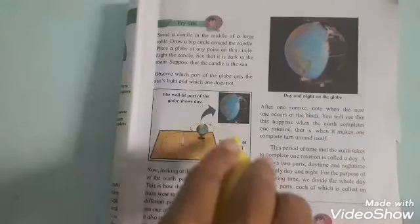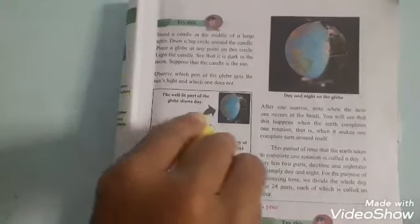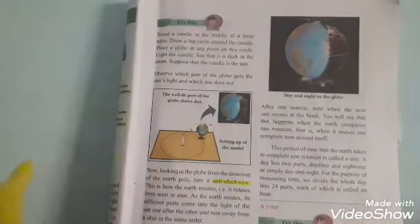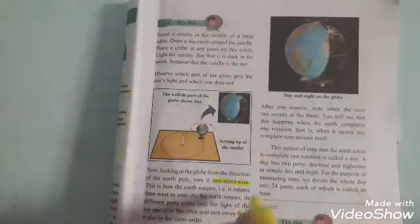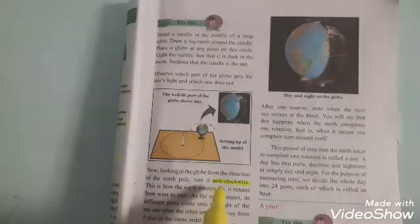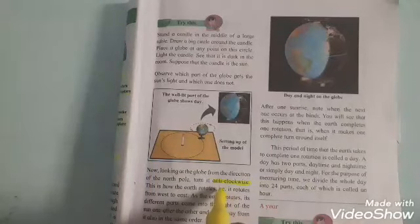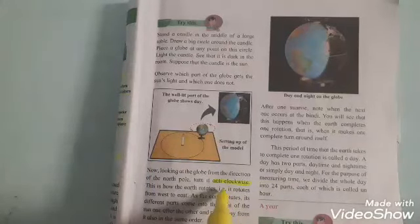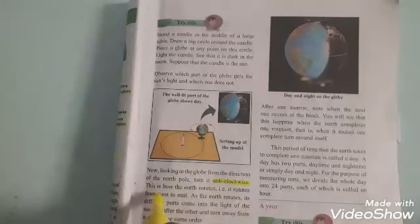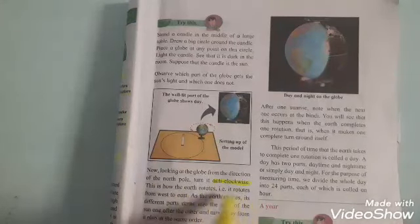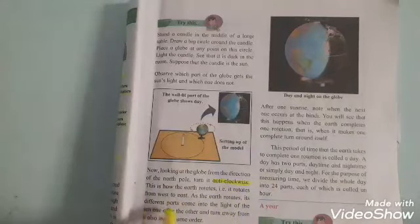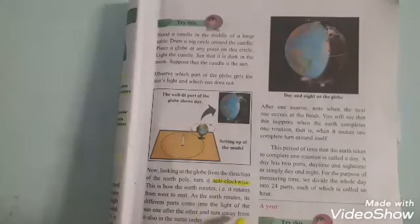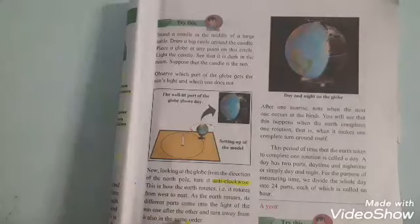So, in this way the hands of clock move. And what is mean by anti-clockwise? Exactly opposite direction. This is how the earth rotates. That is, i.e. means that is, it is the short form. It rotates from west to east. As the earth rotates, its different parts come into the light of the sun one after the other and turn away from it. Also in the same order.